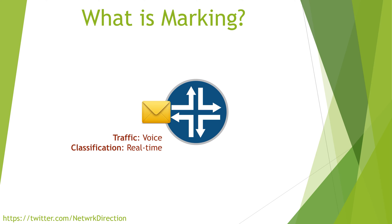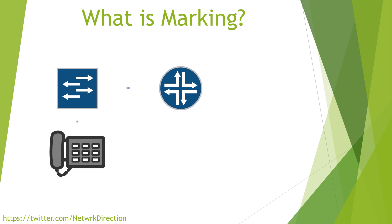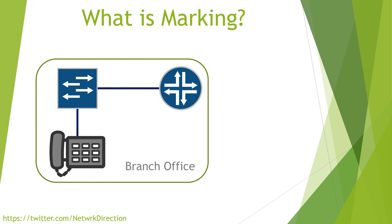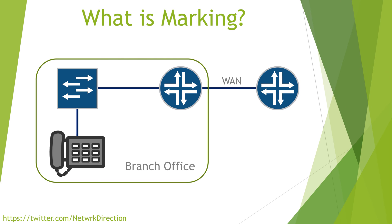What does marking mean and why would we do it? Imagine a phone at a branch office. When a phone call is made, packets are sent out of the phone across the WAN link to the head office. Before the phone sends these packets, it will add a little extra information to the IP header. This identifies that the packets contain voice data. So we can say this phone is marking these packets.